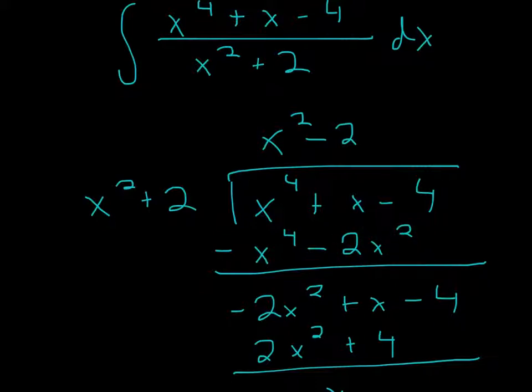Now remember in division, when you're doing it manually, you're always subtracting. So now you're going to reverse all those signs, because even though this was positive, x squared times x squared is x to the 4th, it's going to be subtraction. Same thing here, x squared times 2, it's going to be 2x squared, but it's going to be negative.